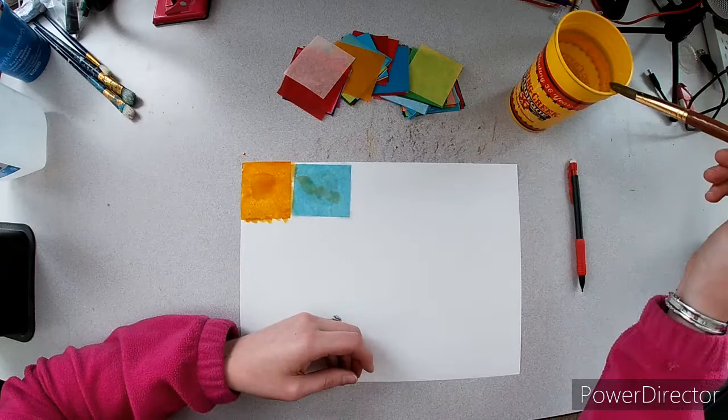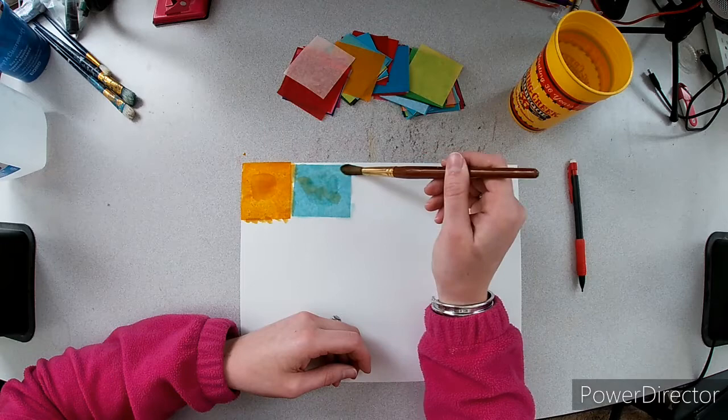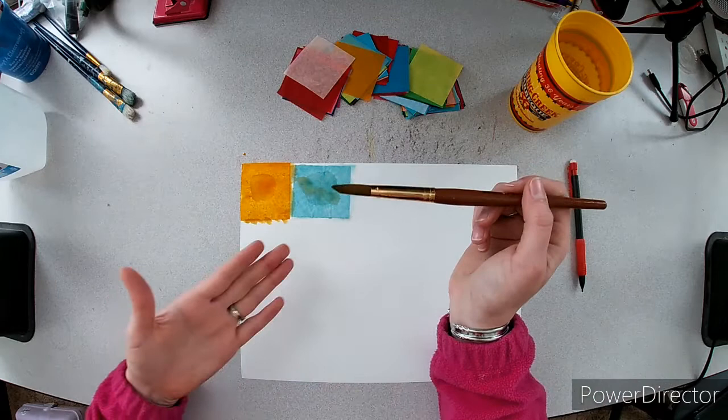So if you think about a sponge, a sponge can hold water and you can keep adding more water and more water to the sponge, but at some point the sponge can't hold any more water and the water just runs through it because it's full.